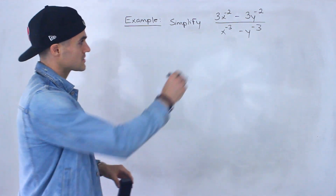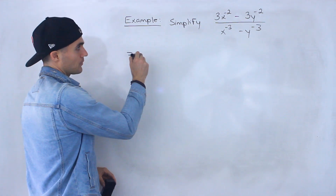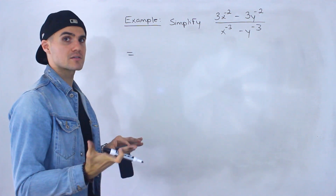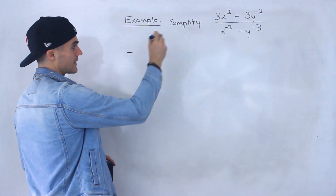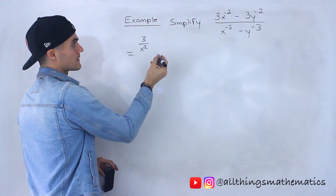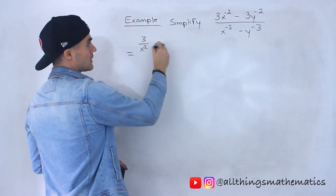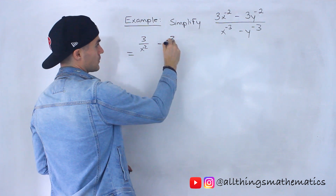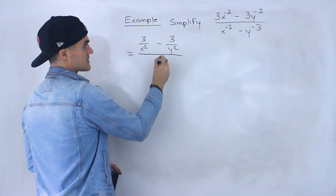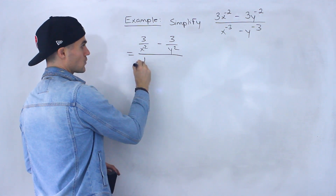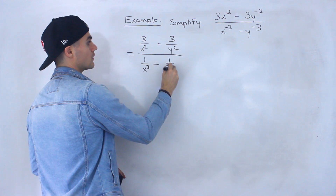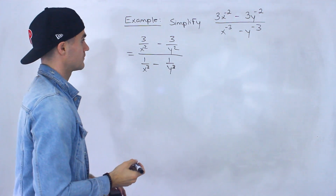To start this off, what I'm going to do is take all of the exponents in the numerator and denominator and change them to positive exponents. So 3x to the negative 2, I'm going to rewrite as 3 over x squared. And then 3y to the negative 2, I'm going to rewrite as 3 over y squared. And this is going to be all over x to the negative 3, which is 1 over x cubed, minus y to the negative 3, which is 1 over y cubed.